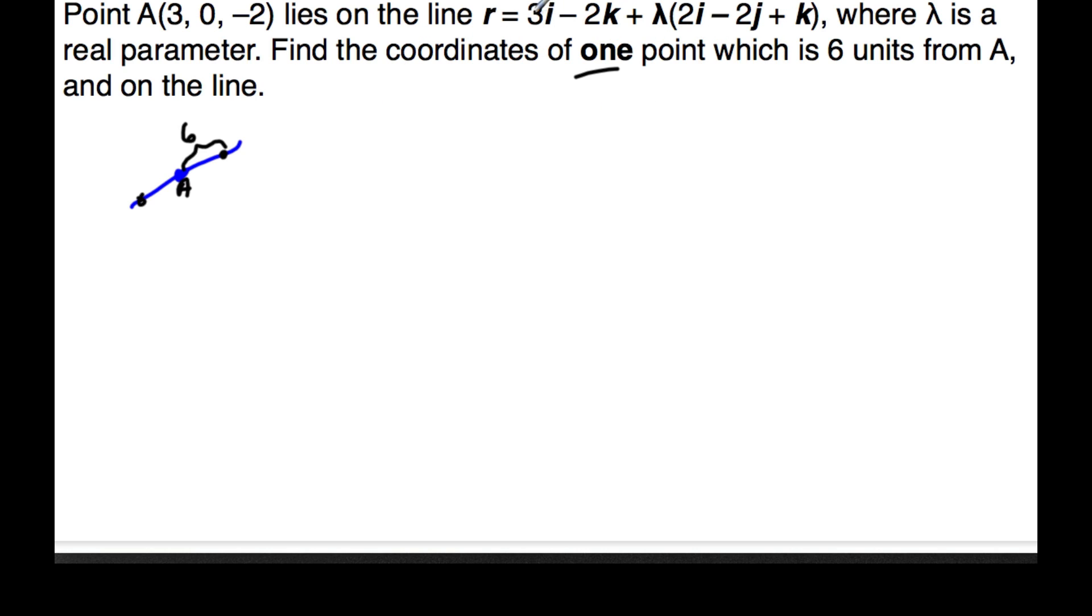One of the things that you could think about is parametrically, you could convert this to parametric equations, find the difference between those parametric values and point A, and once you find that distance, then you set that distance to 6. That's the hard way, and that's what I'll go through first, and then I'll show you a nicer solution.